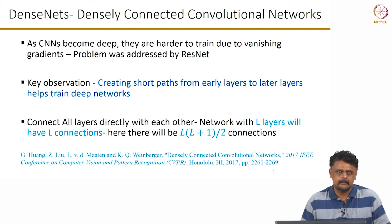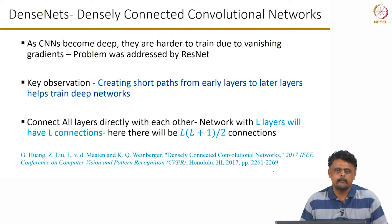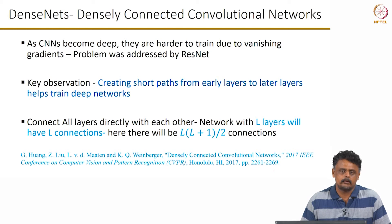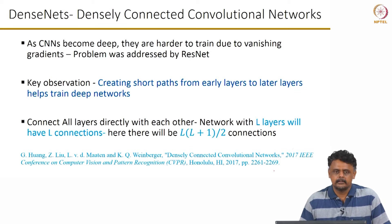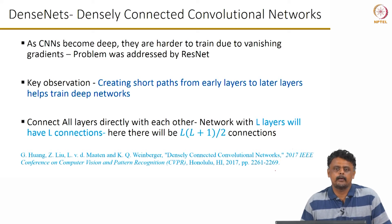The key observation that this paper makes is that by creating short paths from the early layers, closer to the input, to the later layers closer to the output, gradient propagation is improved and so is classification accuracy. In fact, we can train very deep networks of more than 100 layers by adopting this trick. DenseNets improve gradient propagation by connecting all layers directly with each other.